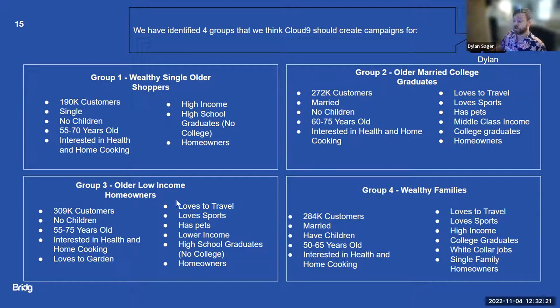They tend to be one of the higher age groups of 60 to 75. They way over indexed on loving to travel, loving sports. They have pets, middle-class income, generally college graduates. Group three, older low-income homeowners. They had a lower income than the rest of the population. Again tended to be older. They like to garden, travel, sports, they have pets. And group four, wealthy families. That's the group we saw that had children in the household.